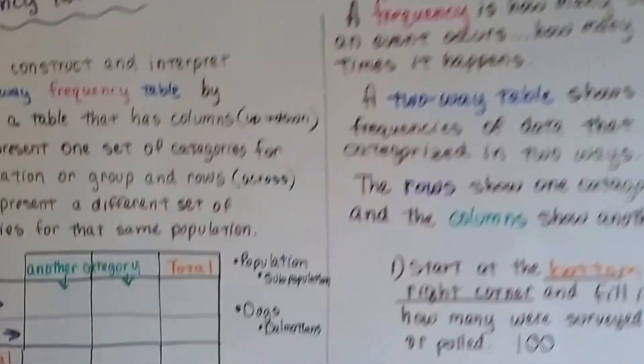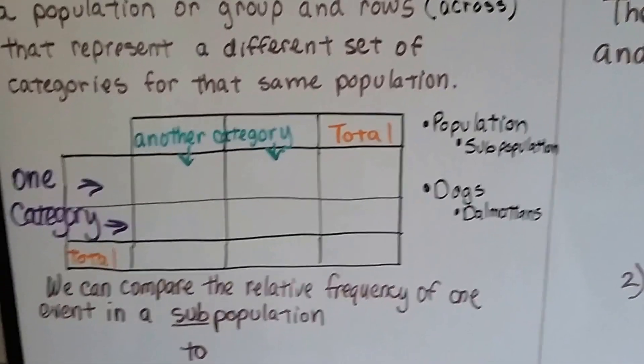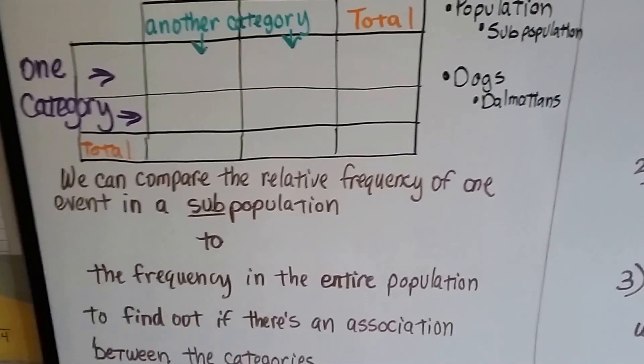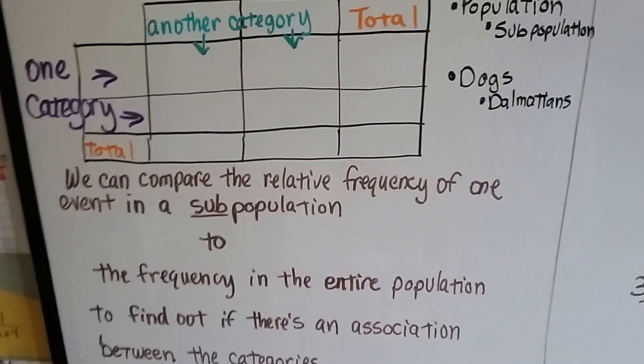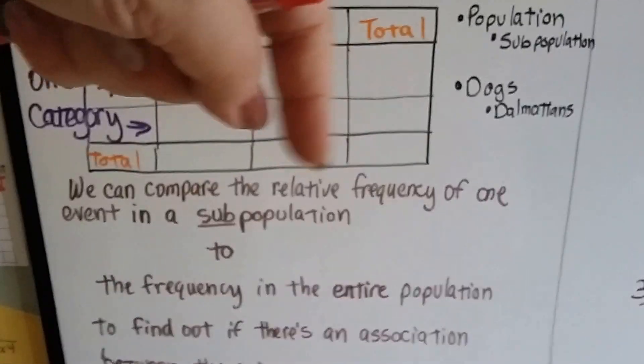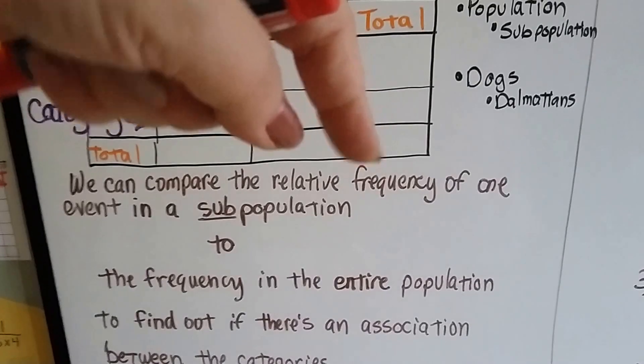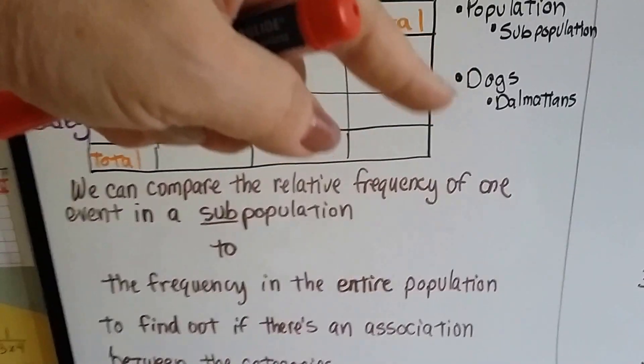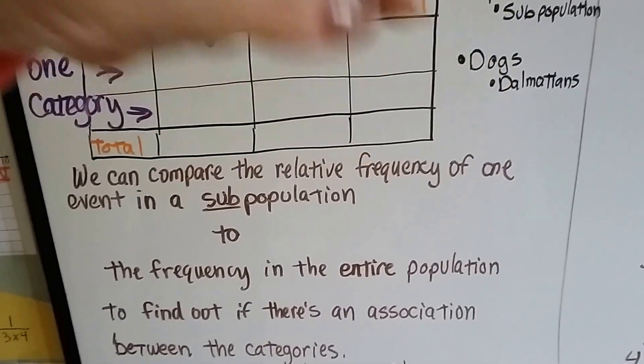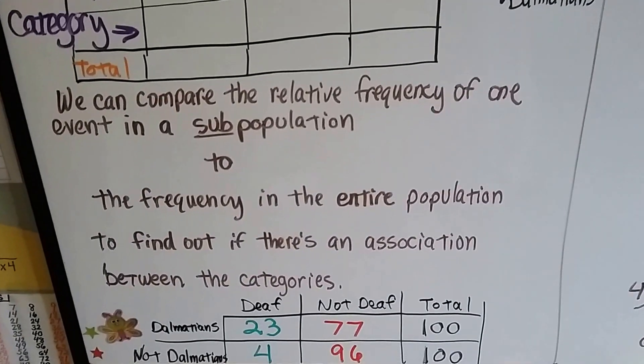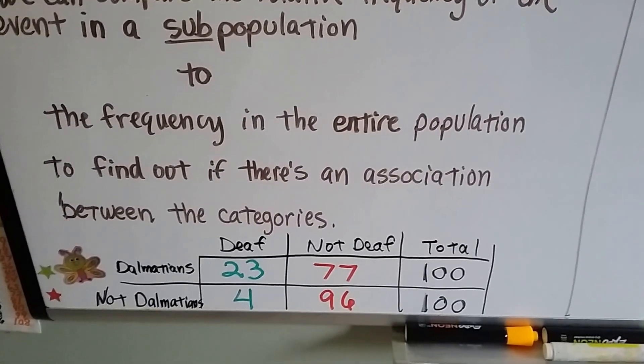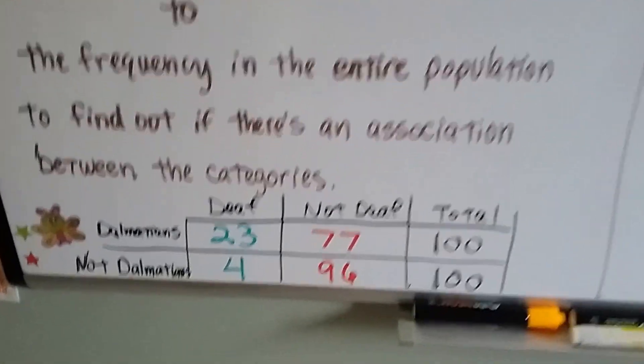We can compare the relative frequency of one event in a sub-population to the frequency in the entire population. So we can compare the relationship of how often something happens in one population, like dogs, compared to the sub-population, just Dalmatians. And we can find out if there's an association between the categories, if there's a connection between those groups.